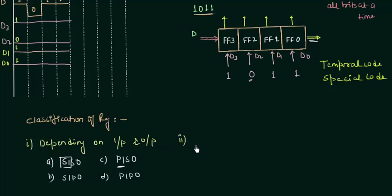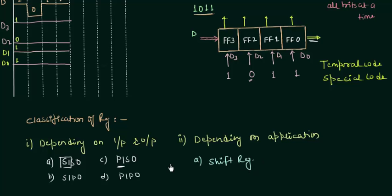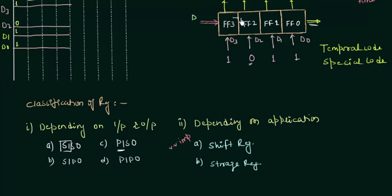We can also classify registers depending upon the application. There are two types: the first is shift registers — very important, we will study it in detail. The second type is the storage register. If you want your data to be shifted from F3 to F2 then F1 then F0 and come out, we call it a shift register. If you just want to store the data and use it when needed with no shifting, we call it a storage register. In this way, PIPO is nothing but the storage register.